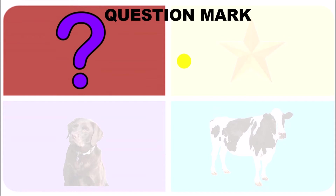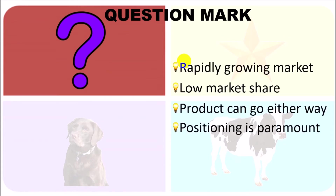The next category is the question mark. Question mark products or product lines are those in a rapidly growing market but where your product has a low market share. It shares one characteristic with the star — a rapidly growing market — but unlike the star, it has a low market share. These products could go either way.